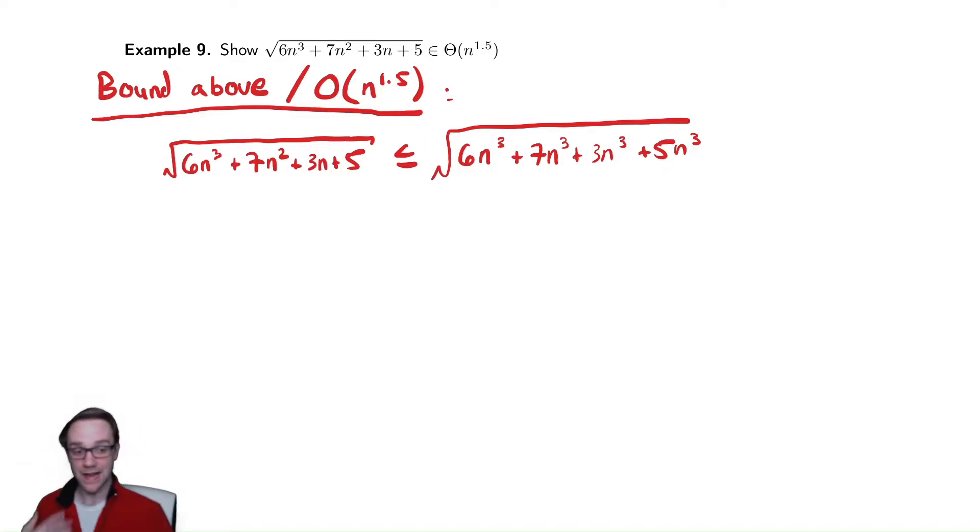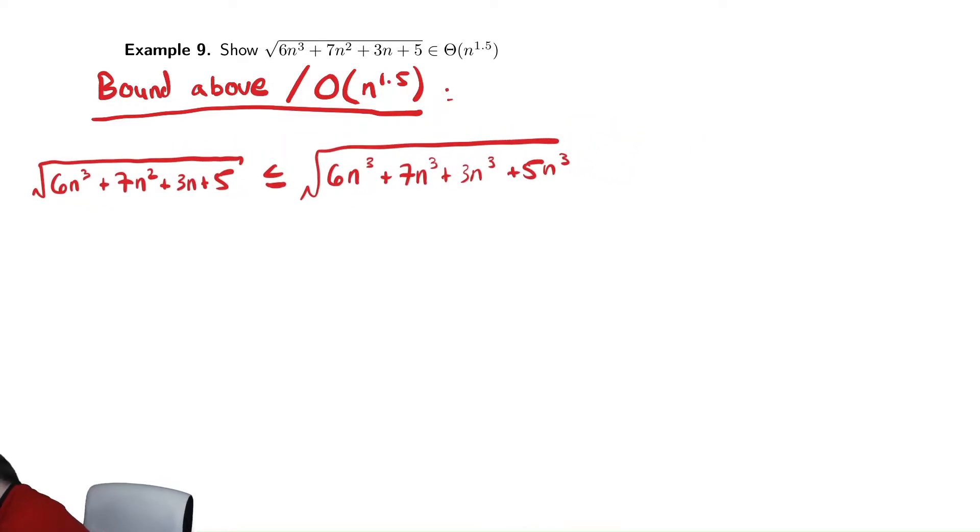But let us verify that that actually holds. So somewhere off to the side, I'm going to check all those inequalities I just did to make sure that they're justified. So I said that 7n squared less than or equal to 7n cubed, which is true when n is greater than or equal to 1. I said that 3n is less than or equal to 3n cubed, which is true when n is also greater than or equal to 1 again.